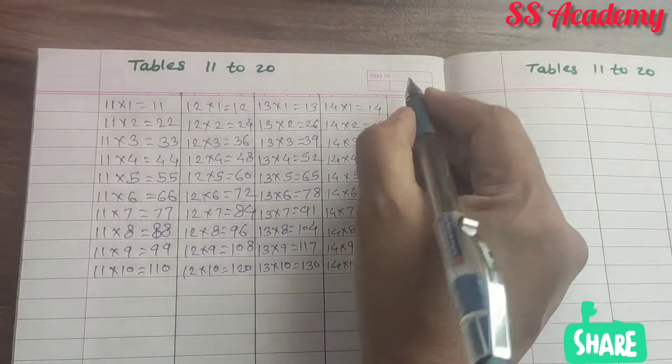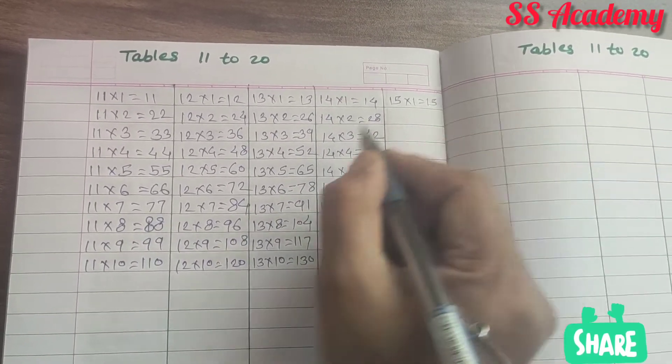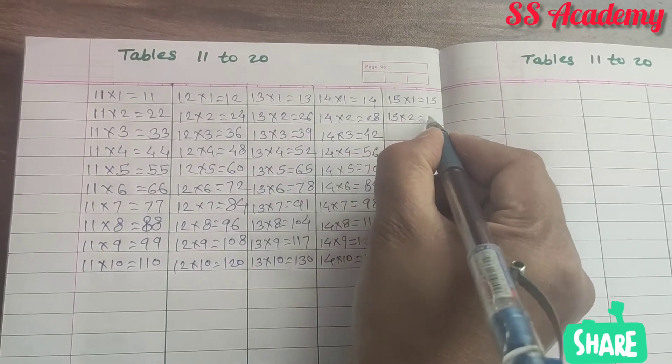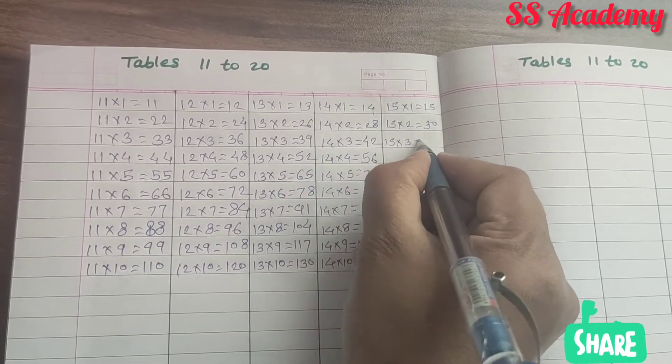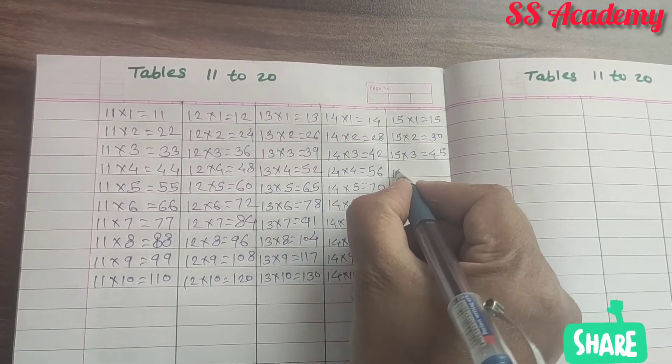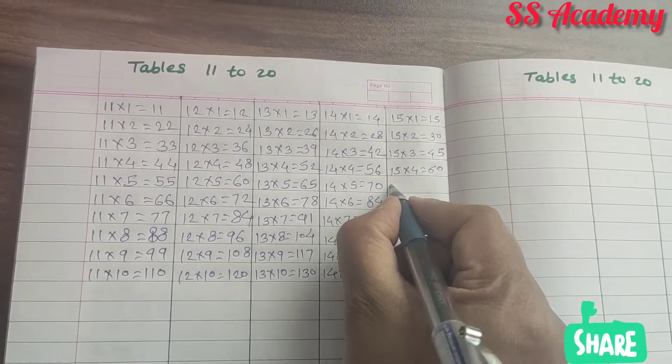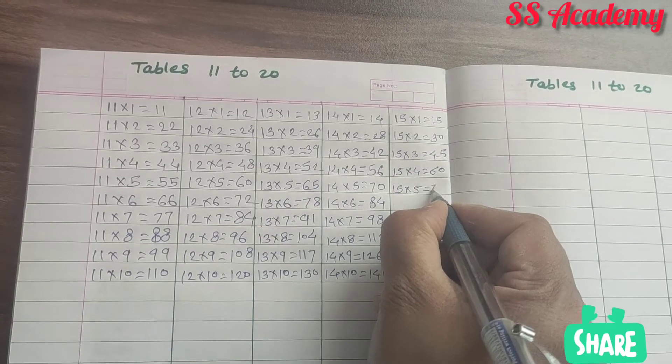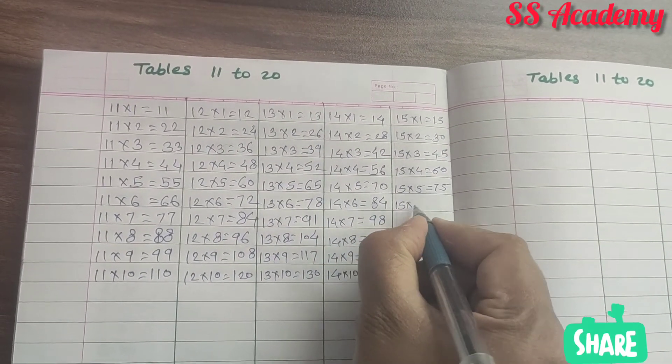Next 15. 15 times 1 is 15. 15 times 2 is 30. 15 times 3 is 45. 15 times 4 is 60. 15 times 5 is 75.